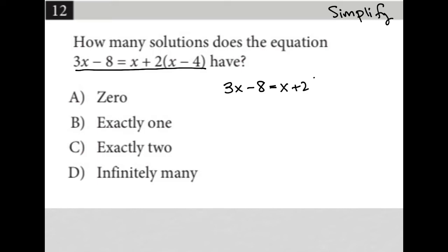So we have this, just rewriting it. I can simplify by distributing the 2 across here. So I have 3x minus 8 equals x plus 2x minus 8. And this becomes 3x. So I end up with 3x minus 8 equals 3x minus 8.